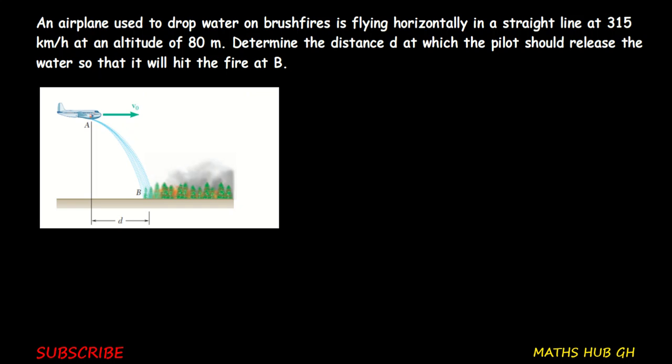Because we want to find distance d, we are going to use this formula: S equals S₀ plus V₀ times t plus half a t squared. Here, S is the final distance, S₀ is the initial distance or position, V₀ is the initial velocity, T is the time, and A is the acceleration.